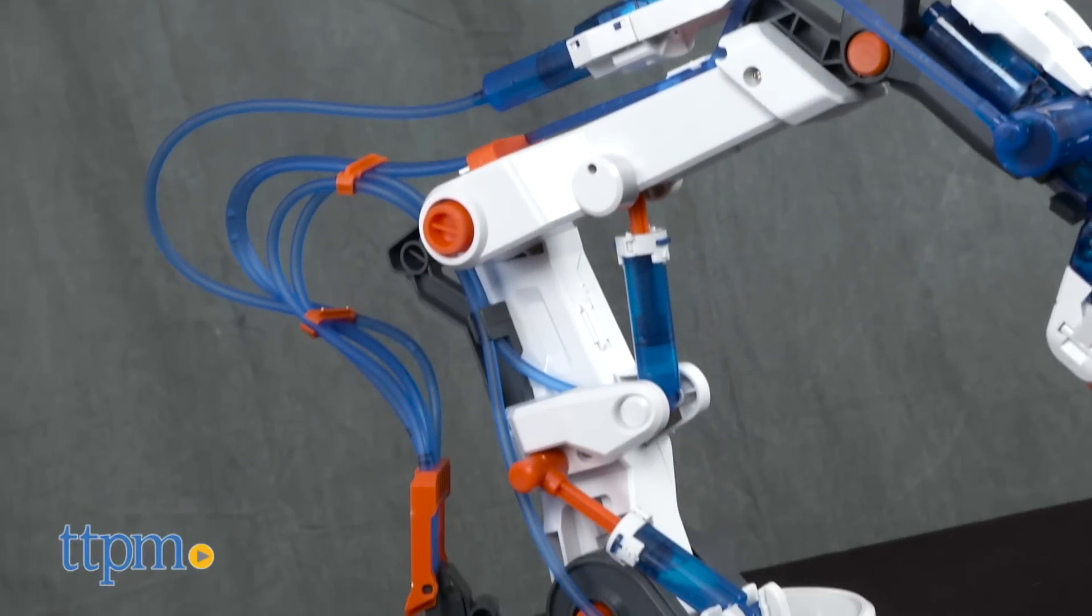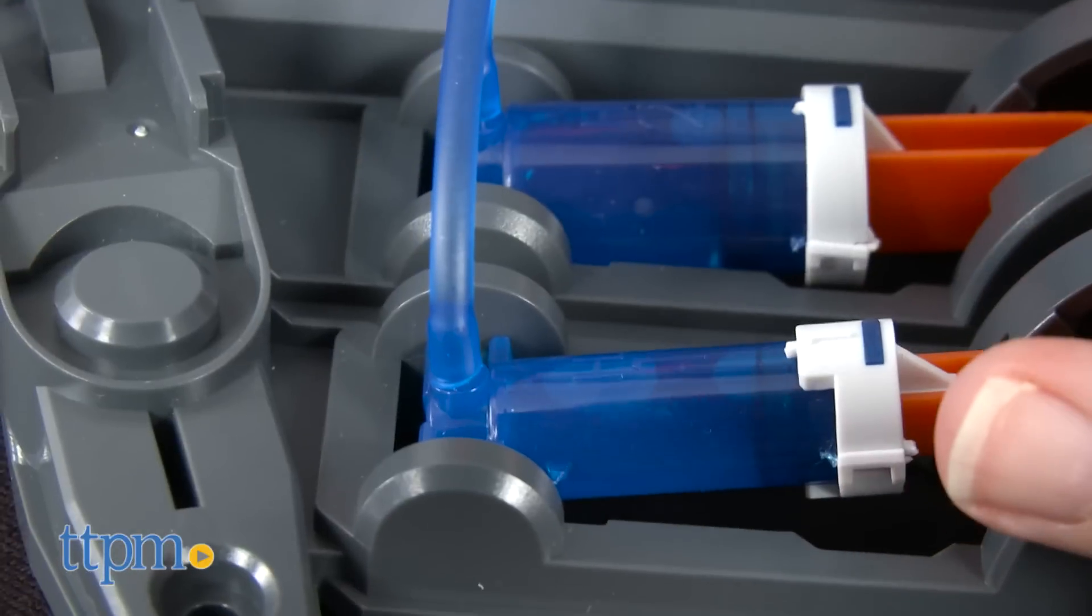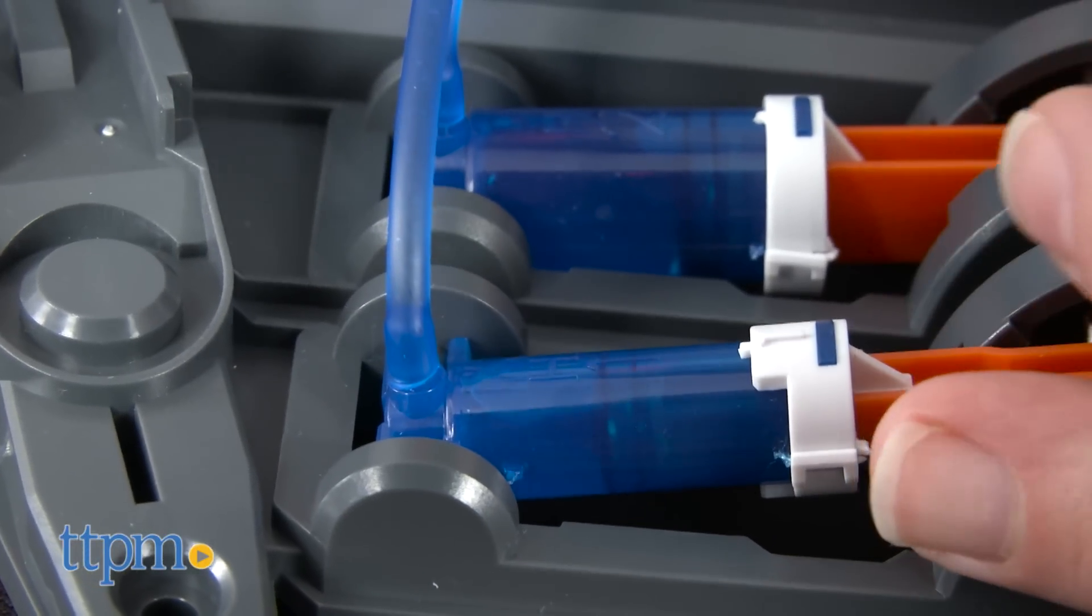The OWI Hydraulic Robot Arm is a no-battery, no-motor, DIY science kit that teaches kids about hydraulics and robotics in a really innovative, hands-on way.